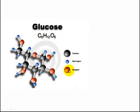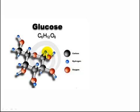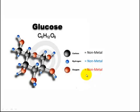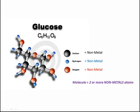Glucose, C6H12O6. You can see here the oxygen in red - six oxygens. The carbon in grey - six carbons. And twelve blue hydrogens which you can count for yourself. Carbon is a non-metal, hydrogen is a non-metal, oxygen is a non-metal. Thus glucose is a molecule because there are two or more non-metal atoms chemically combined.